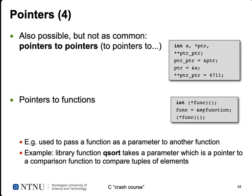Beyond pointers to scalar types, you can also have pointers to pointers, or pointers to pointers to pointers. This is used for efficiently encoding two-dimensional or multi-dimensional arrays. You must be careful to handle the level of indirection correctly — it is also a major source of errors in C programming.